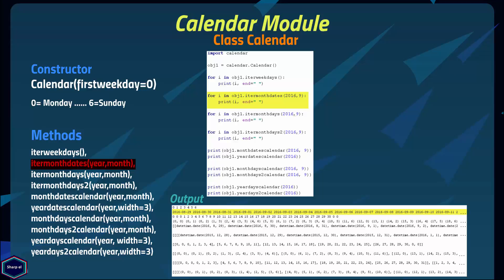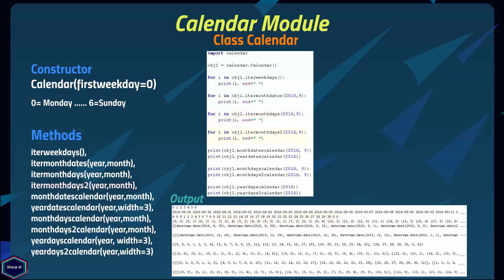The itermonthdates() method takes two arguments — year and month — and returns an iterator for all days of the given month, including days before the start and after the end of the month needed to complete a full week. The itermonthdays() method is very similar but the output is simply the day numbers, with days outside the month set to 0. The itermonthdays2() method is similar but the output contains tuples consisting of a day number and a weekday number.